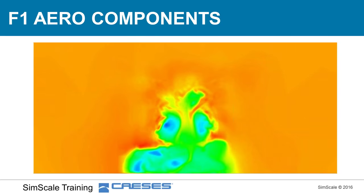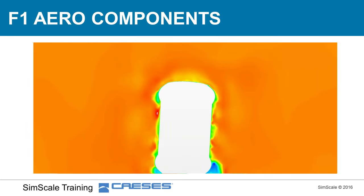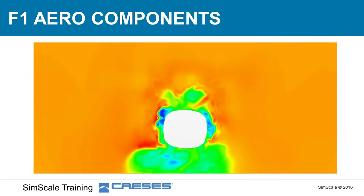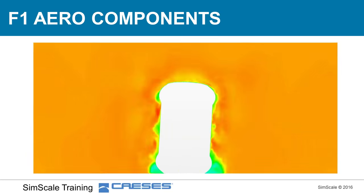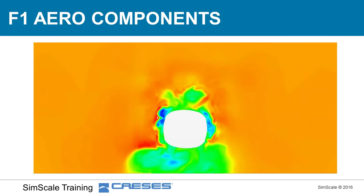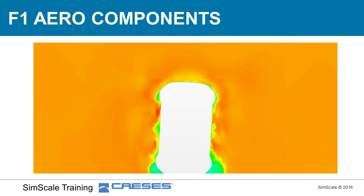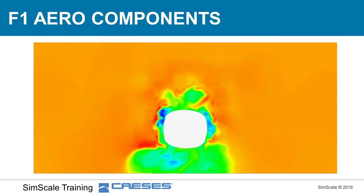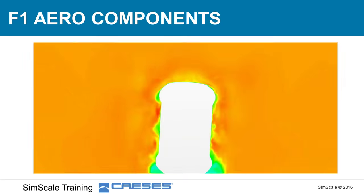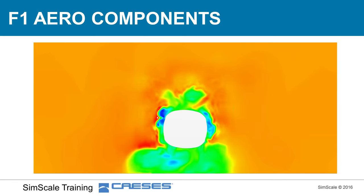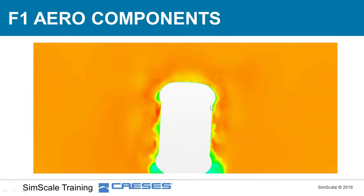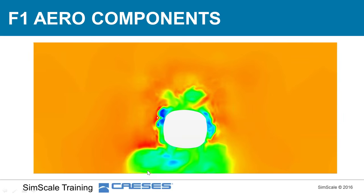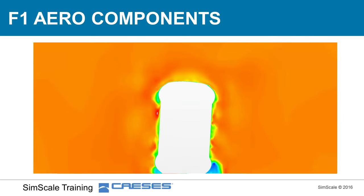We can see in this picture why so much emphasis is placed on managing the front tire wake — the flow behind the tire is really turbulent with low kinetic energy, because the tire is not an aerodynamically efficient shape. Red and orange colors represent high kinetic energy flow, while blue represents low kinetic energy. If this turbulent flow goes directly to the side pod and floor leading edge, it significantly reduces their efficiency.